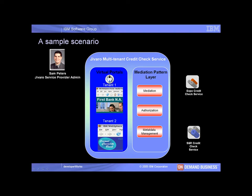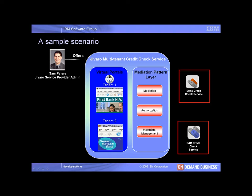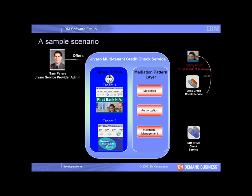Javaro Service Provider Administrator Sam Peters would like to offer a new credit check web service integrated with two external service providers, Expo and SNR. He would like to enable multi-tenancy without any code changes to his existing single-tenant services. Based upon requests from Betty Nord, the First Bank Administrator, and Karen Sims, the Second Bank Administrator,